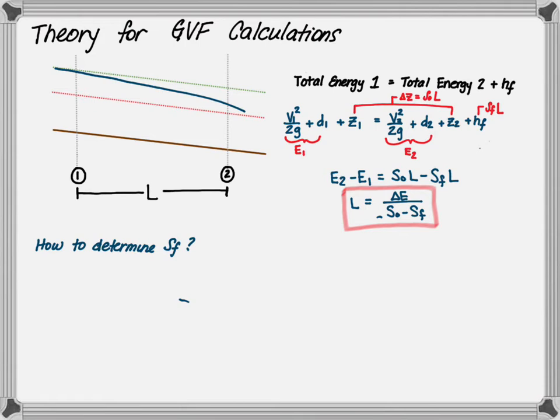We can now rewrite the equation as E2 - E1 = S0×L - SF×L. This can further be written as: length equals the change in energy divided by the bed slope minus the friction slope, or L = ΔE/(S0 - SF).